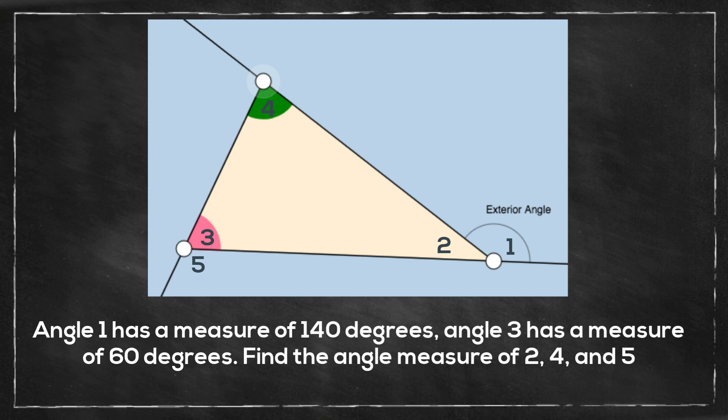Let's look at this problem. Angle 1 has a measure of 140 degrees. Angle 3 has a measure of 60 degrees. Find the angle measures of 2, 4, and 5.